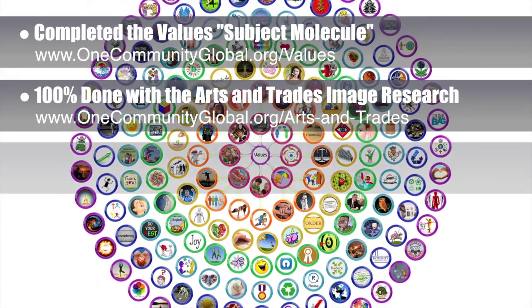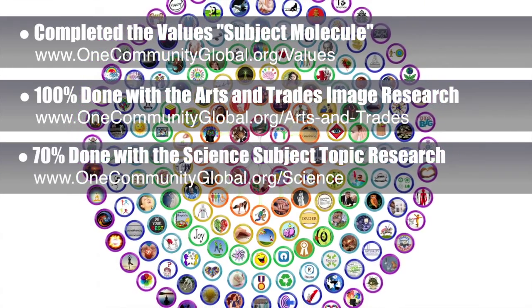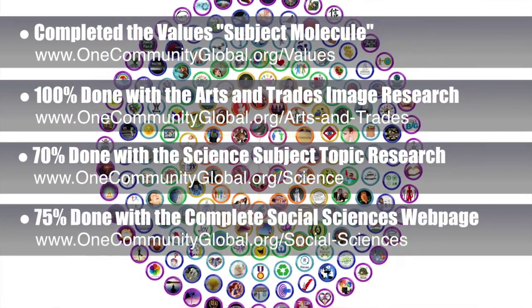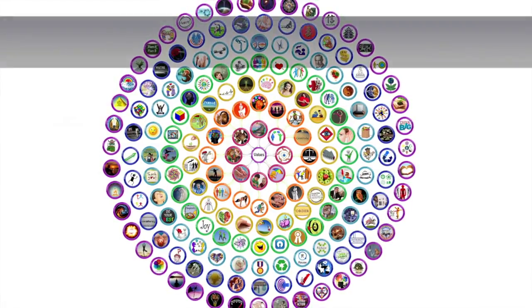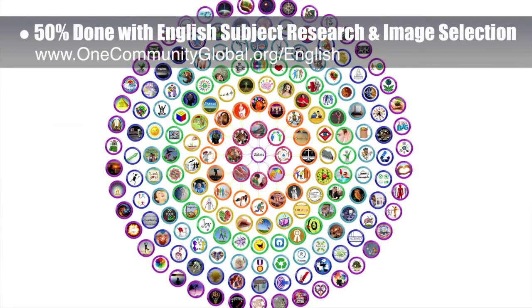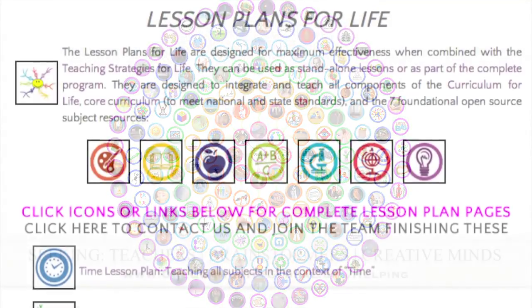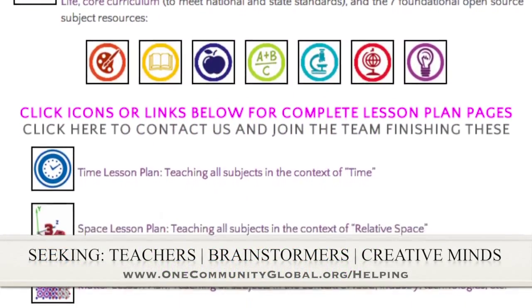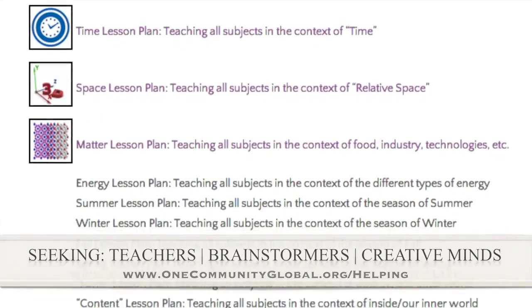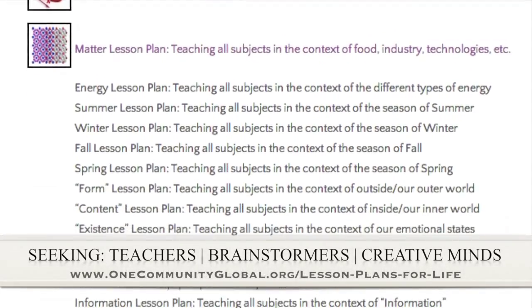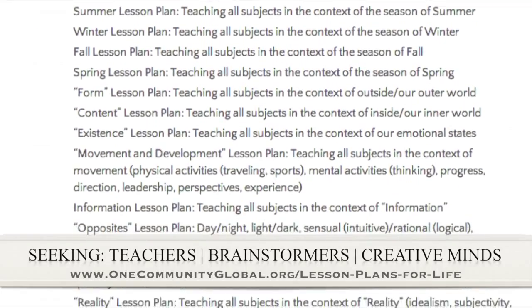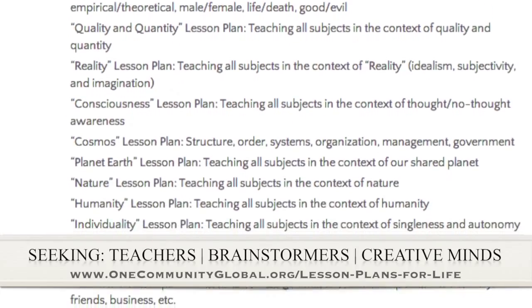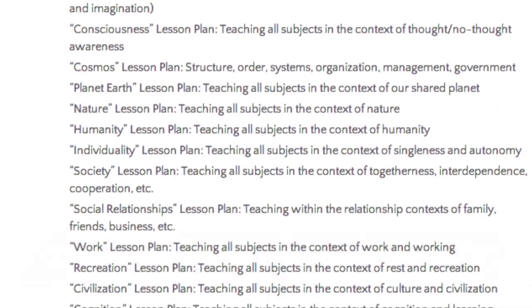We are 70% done with the science subject topic research, and 75% done with the new social sciences complete subject web page, which you can see developing on the website. We are 50% of the way done with the English subject research and image selection. If you'd like to help with this education program, we are seeking people to finish these lesson plans — we have them all outlined and are looking for creative minds to contribute to our open source and free shared education program for all ages.